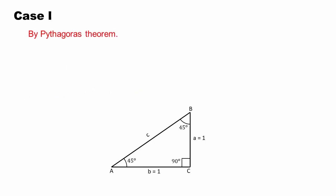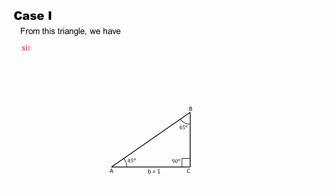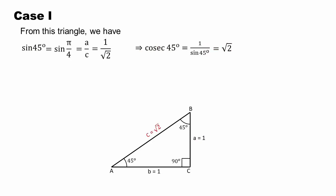Using the Pythagorean theorem, C squared plus B squared gives us the hypotenuse. Taking 1 squared, we get 1 plus 1. Adding the values, C squared is equal to 2, so the hypotenuse is under root 2.